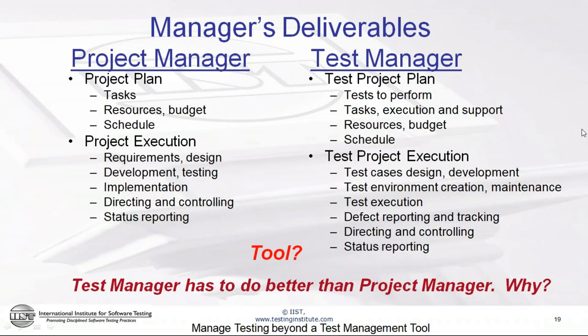Let me talk a little bit cynically here. If there's a problem in the project, the project manager can point to the testing people, the developers, the analysts, the performance people, or operations — part of the project management role is the ability to point fingers elsewhere. Test managers don't have anyone to point to; they're at the end of the line. They're stuck, and that means they have to do a better job because they just can't rely on pointing fingers. Somewhat cynical, but very true.